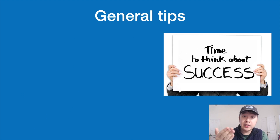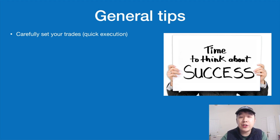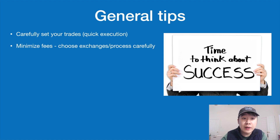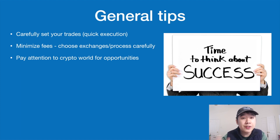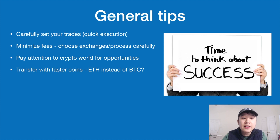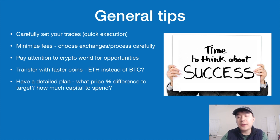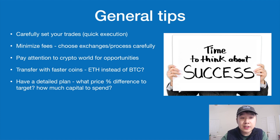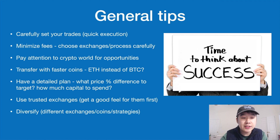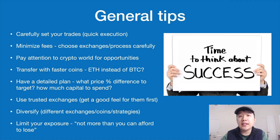Some general tips for attempting arbitrage: carefully set your trades and make sure they execute quickly. Minimize fees by choosing the right exchanges and processes. Stay informed about crypto news for potential opportunities. Transfer with faster coins — maybe Ethereum instead of Bitcoin, or whichever has less network congestion. Have a detailed plan: know your target price percentage difference and how much capital you'll deploy. Use trusted exchanges and get comfortable with them before committing large amounts. Diversify in terms of exchanges, coins, and strategies. And always limit your exposure — never risk more than you can afford to lose.